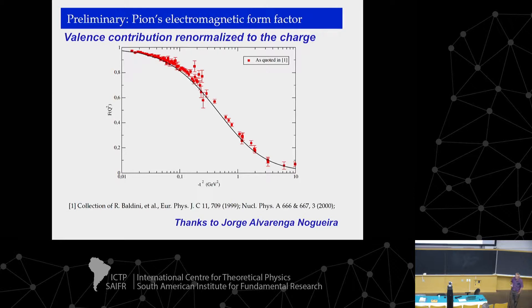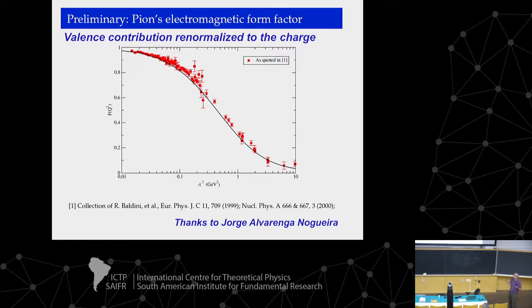We computed the form factor, but at this moment only using the valence component. The valence probability is about 68%, so we had to renormalize. We wonder about the contributions of the higher Fock components — because even this model has higher Fock components: q-qbar plus vector mass and q-qbar plus two vector masses, and so on. These are the higher Fock components in this model, and the pion seems simple enough to allow this kind of solution.